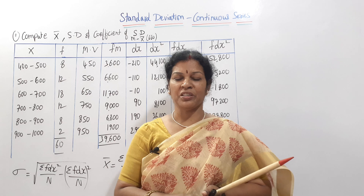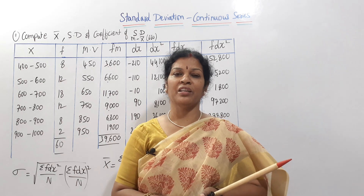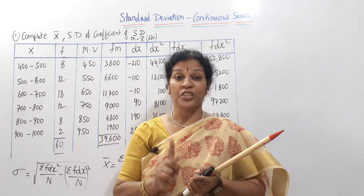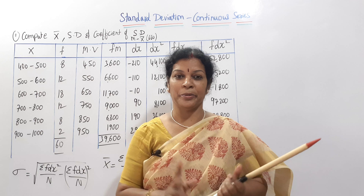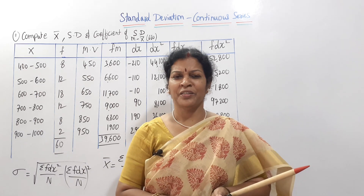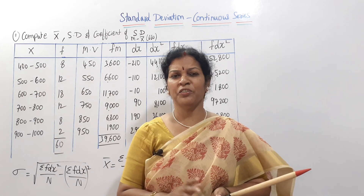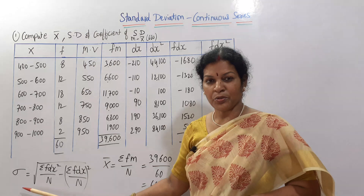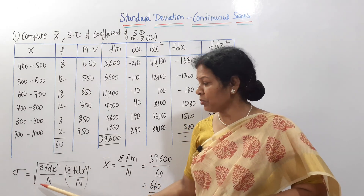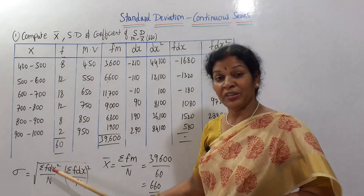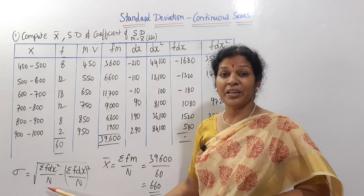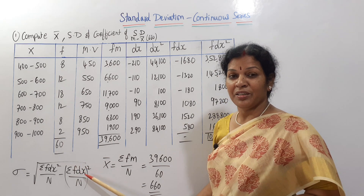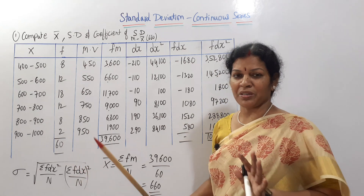The important thing is that standard deviation calculation in discrete series and continuous series uses the same formula. Rho is equal to root of sigma f dx squared by n minus sigma f dx by n, whole square.